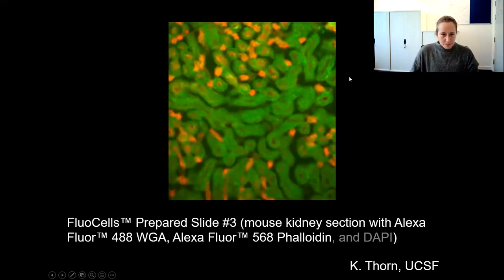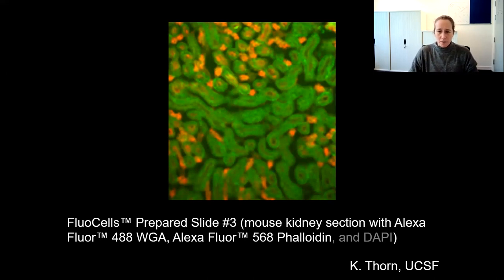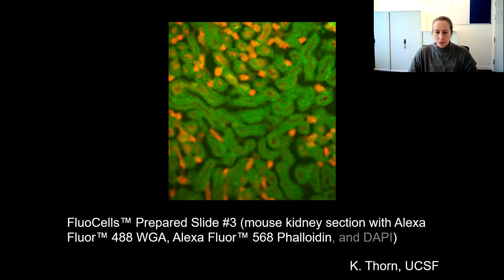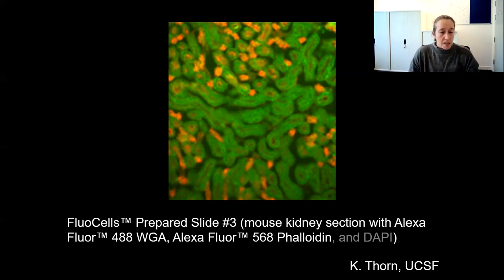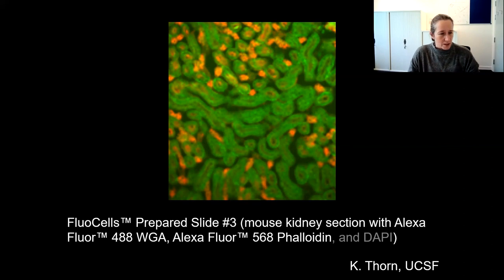If you are reading almost any biological paper, it will invariably have a microscope image, and that's because the optical microscope is now considered such a widespread tool in biological and biomedical sciences. The image shown here is a mouse kidney section, which you can buy from Thermo Fisher. This particular section has been stained with three fluorescent dyes, only two of which are shown here.